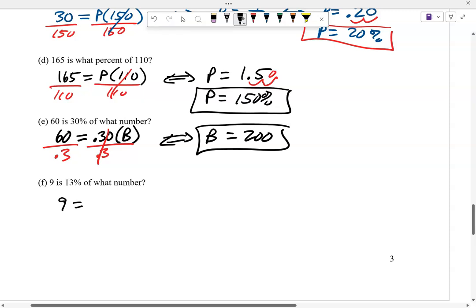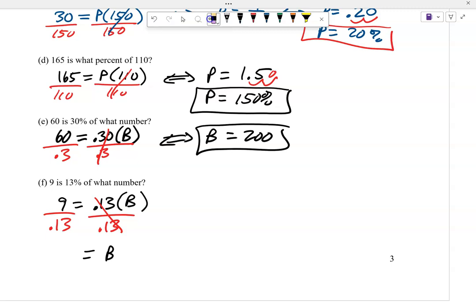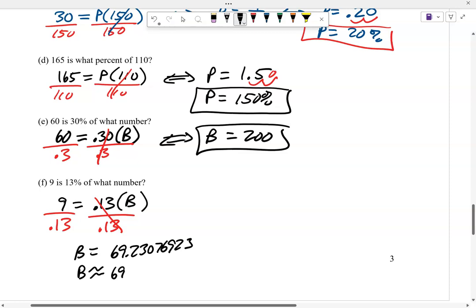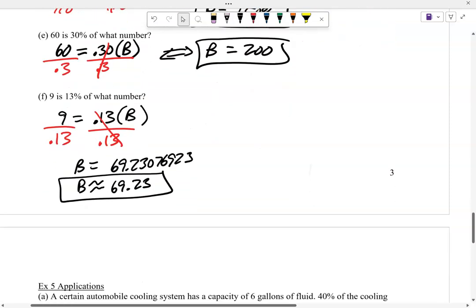Let's do this last one. 9 is 13%, convert it to a decimal, of what number? 9 equals 0.13 times B. Solve for B. We have B ends up being 9 divided by 0.13. It gives us 69.23. Let's round that to two decimal places, 69.23.